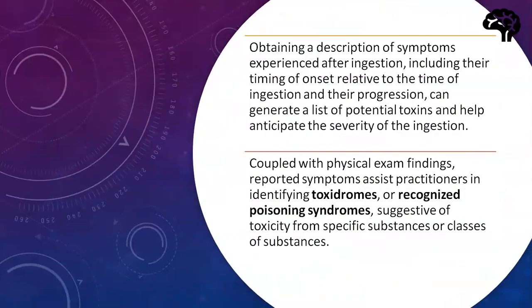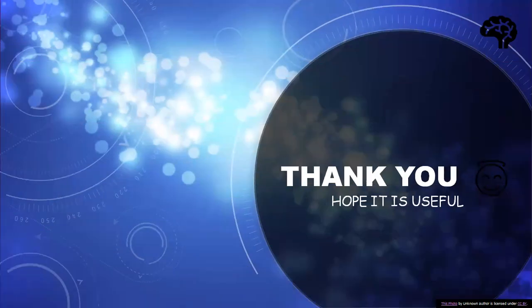In conclusion, obtaining a description of symptoms experienced after ingestion — including their timing of onset relative to the time of ingestion and their progression — can generate a list of potential toxins and help anticipate the severity of the ingestion. Coupled with physical exam findings, reported symptoms assist practitioners in identifying toxidromes, also called recognized poison syndromes, suggestive of toxicity from specific or multiple substances. Thank you everyone for watching. Hope it's useful. If you like the video, please like, share, and subscribe. Be safe and take care.